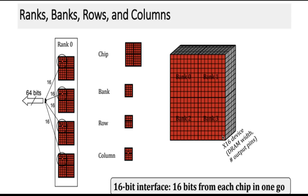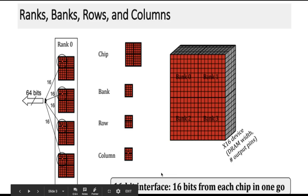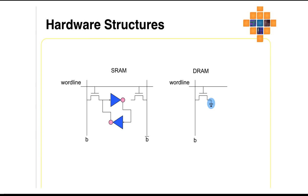This is an x16 device DRAM with a number of output pins. When you see a x16, x8, or x4 device, that means in one go it will transfer that many bits of memory. Here it is x16, which means one chip will transfer 16 bits of data in one go. With four chips total, each transferring 16 bits, the total transfer is 64 bits. This is a 16-bit interface — each chip transfers 16 bits per read or write operation.